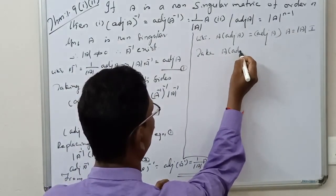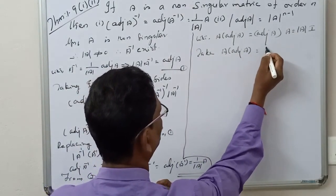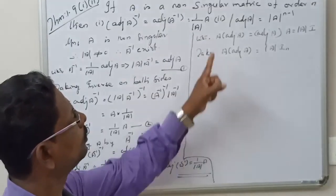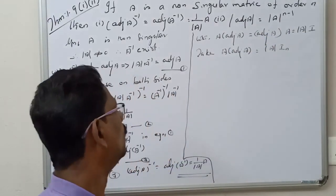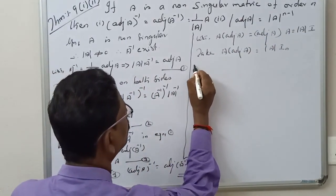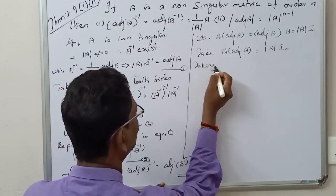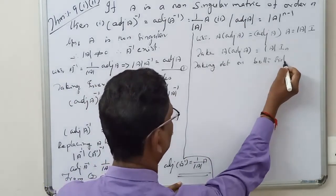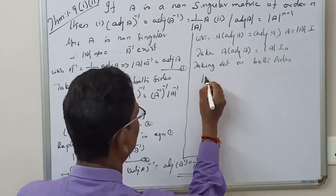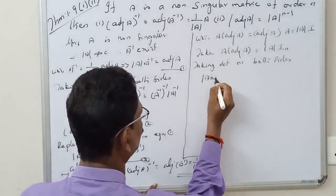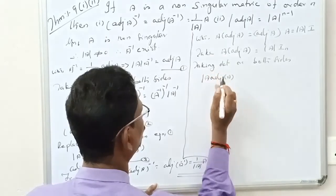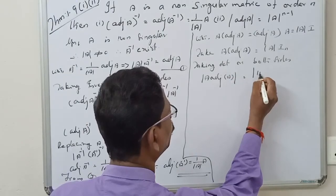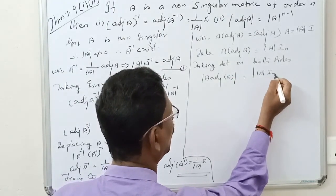Take A into adjoint of A equals determinant of A into I sub N, because the given matrix is of order N. Taking determinant on both sides: determinant of A into adjoint of A equals determinant of determinant of A into I sub N. Using the property determinant of AB equals determinant of A into determinant of B, we split this up.